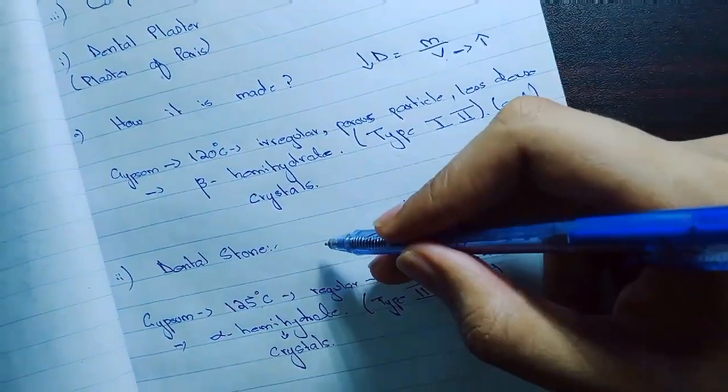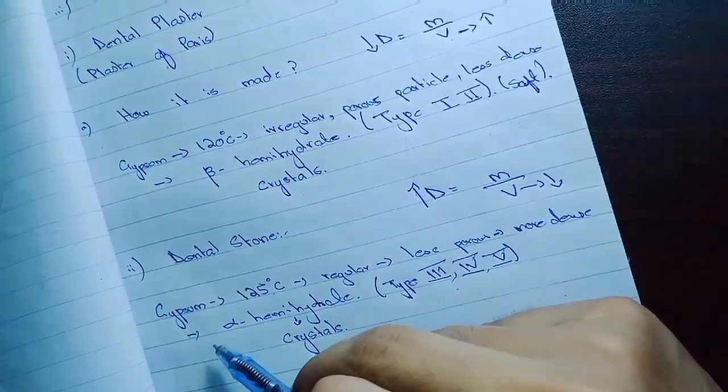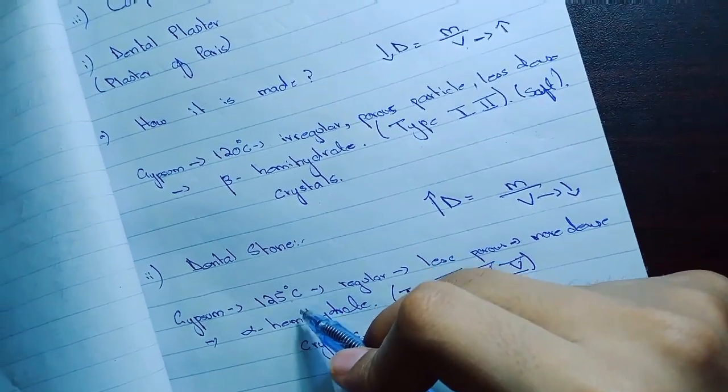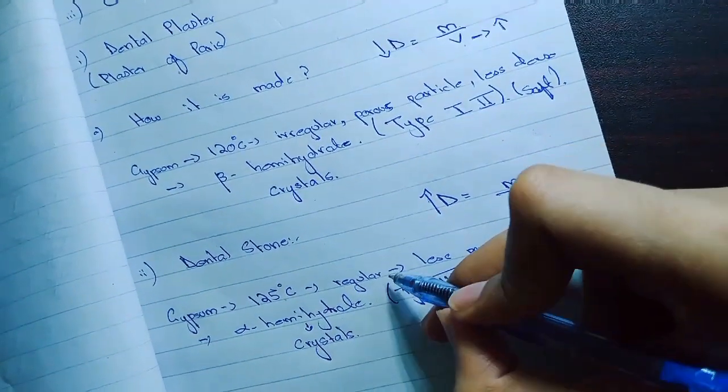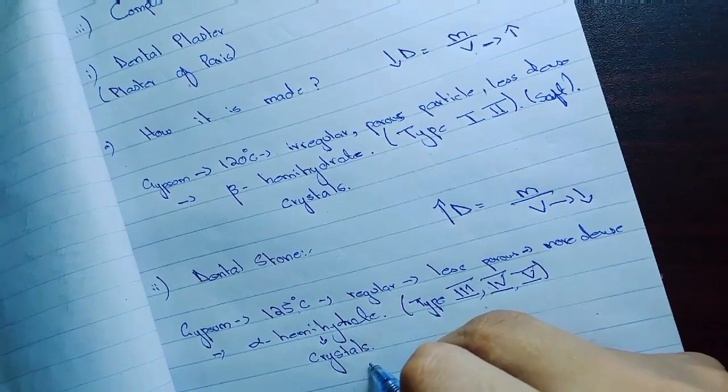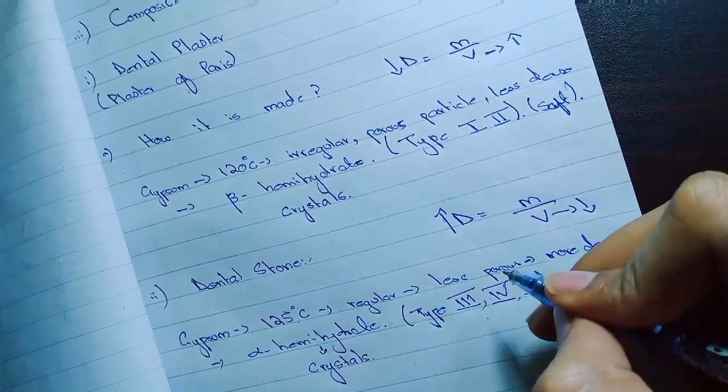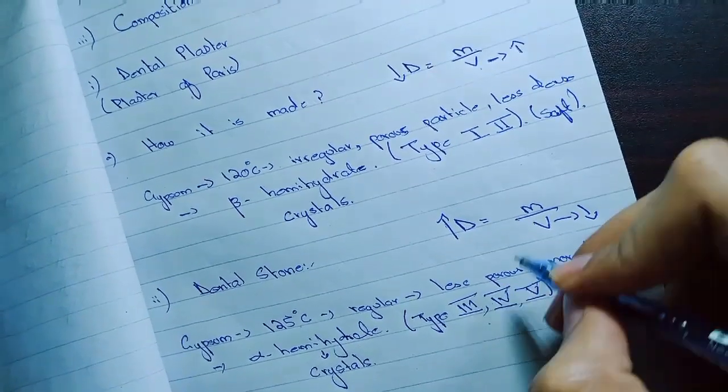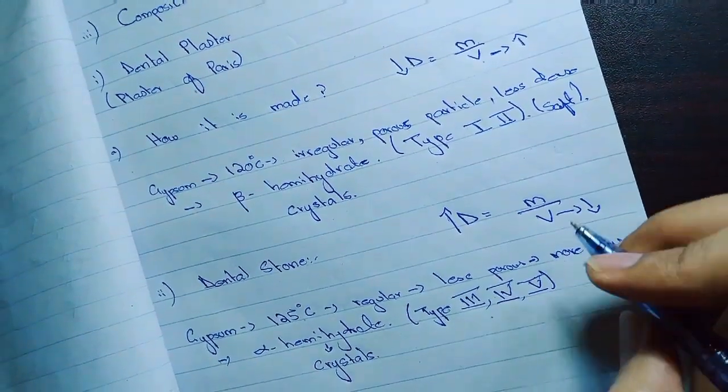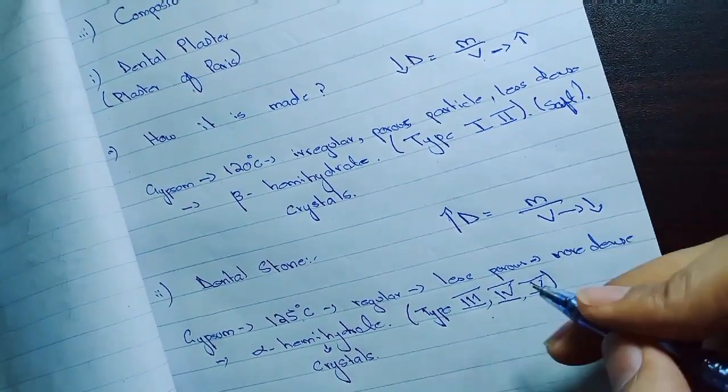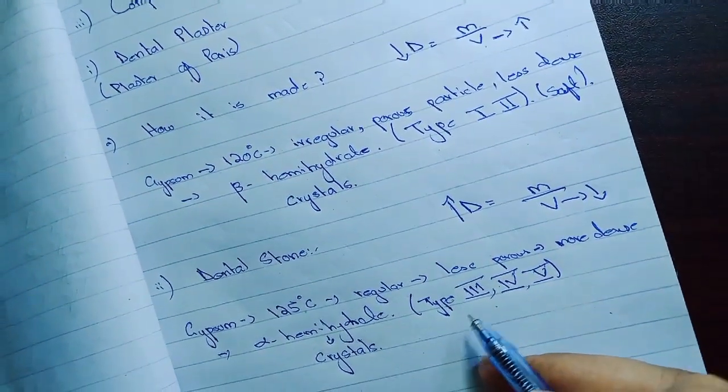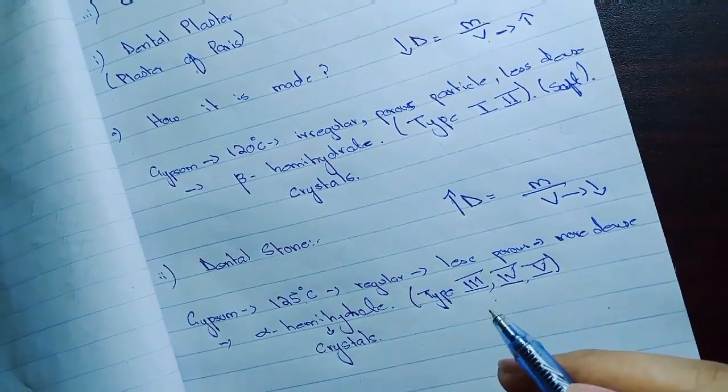Now how the dental stone is made. Dental stone is made by heating gypsum at slightly higher temperature, 125 degree centigrade in an autoclave. Then we get irregular, less porous and more dense particles. We call them alpha hemihydrate crystals. Same reason here. As they are less porous, the volume portion goes down and the density rises up. So it is more dense and it is comparatively harder than the dental plaster. As it is mentioned again in the classification, type 3, type 4 and type 5 are the dental stone.